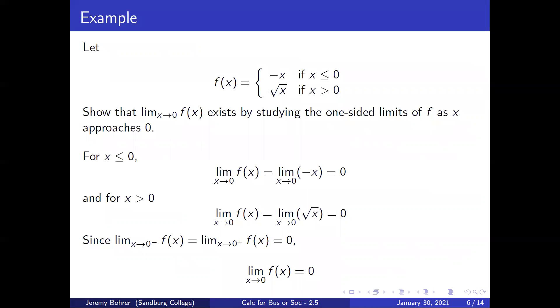But since the limit as x approaches 0 from below of f(x) is equal to the limit as x approaches 0 from above of f(x), and both equal 0, the limit as x approaches 0 of f(x) equals 0.